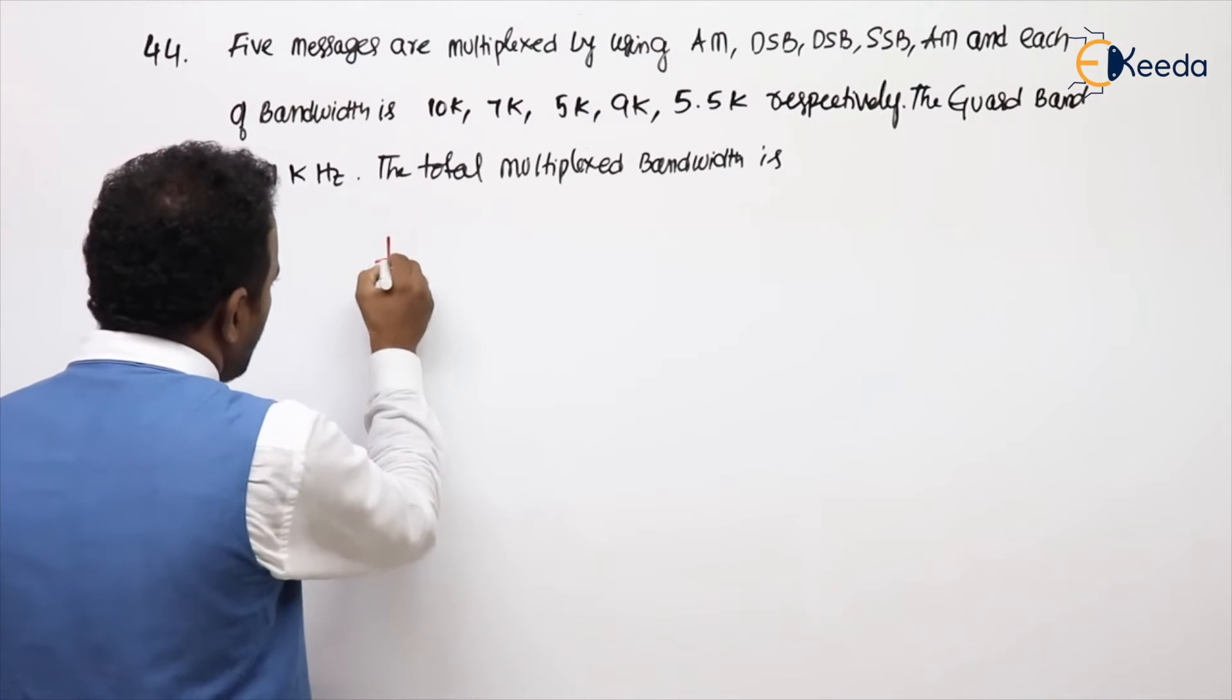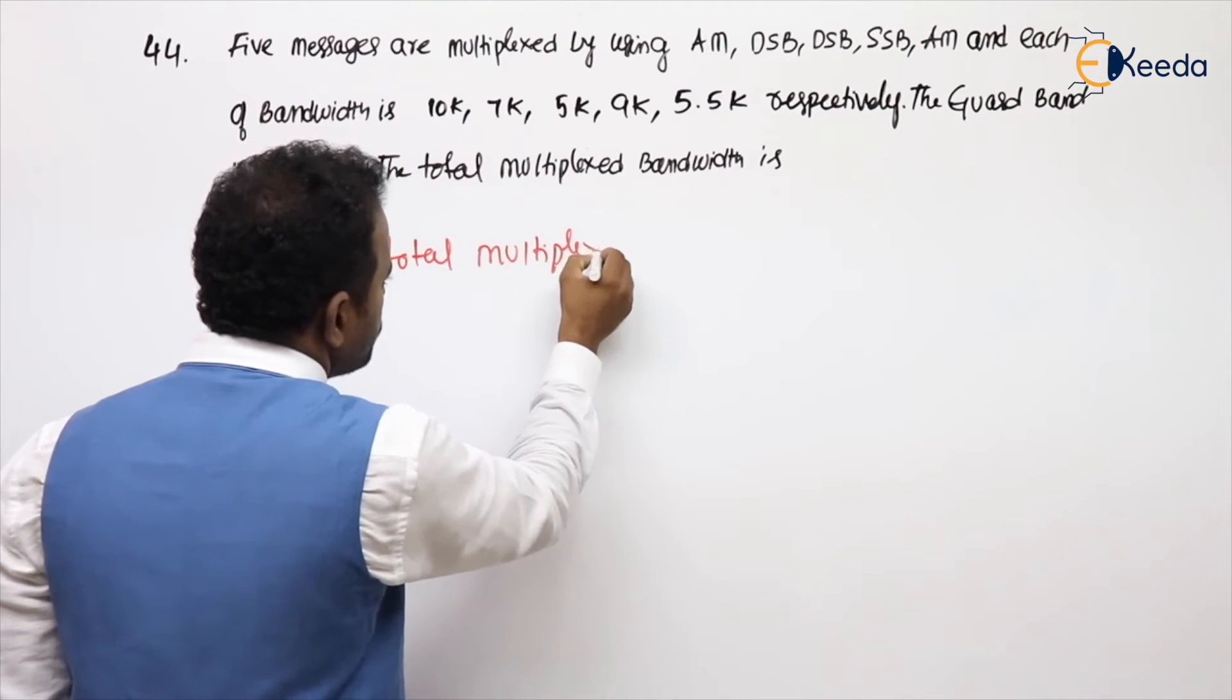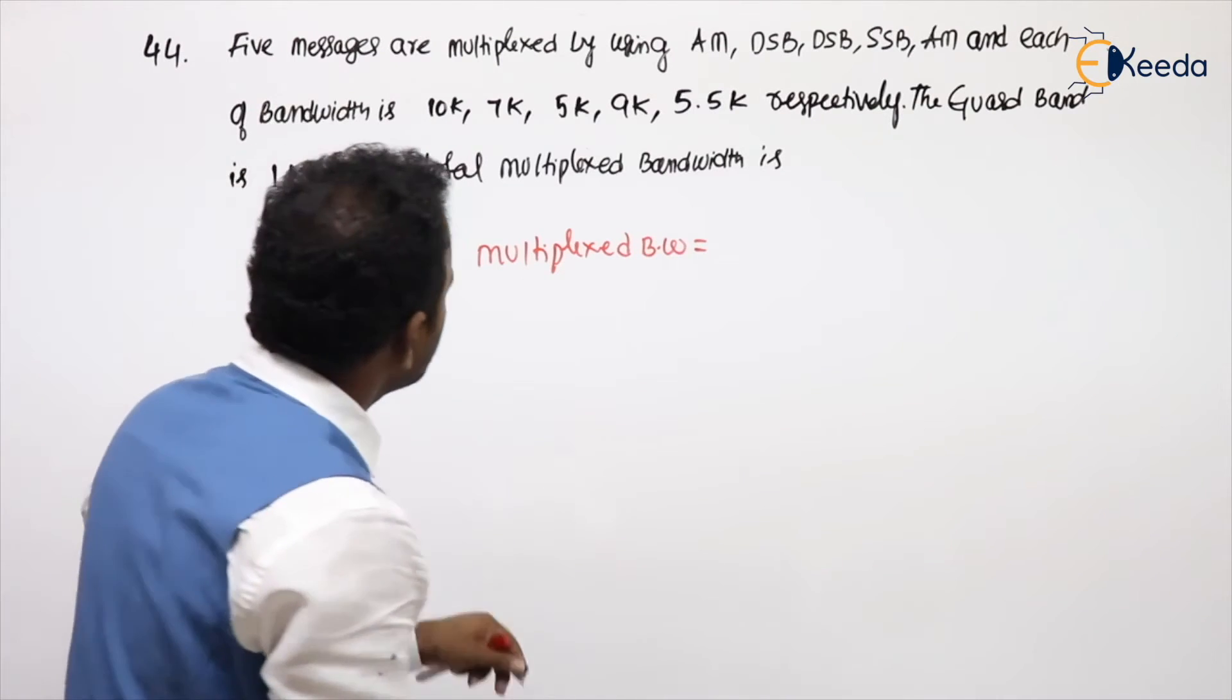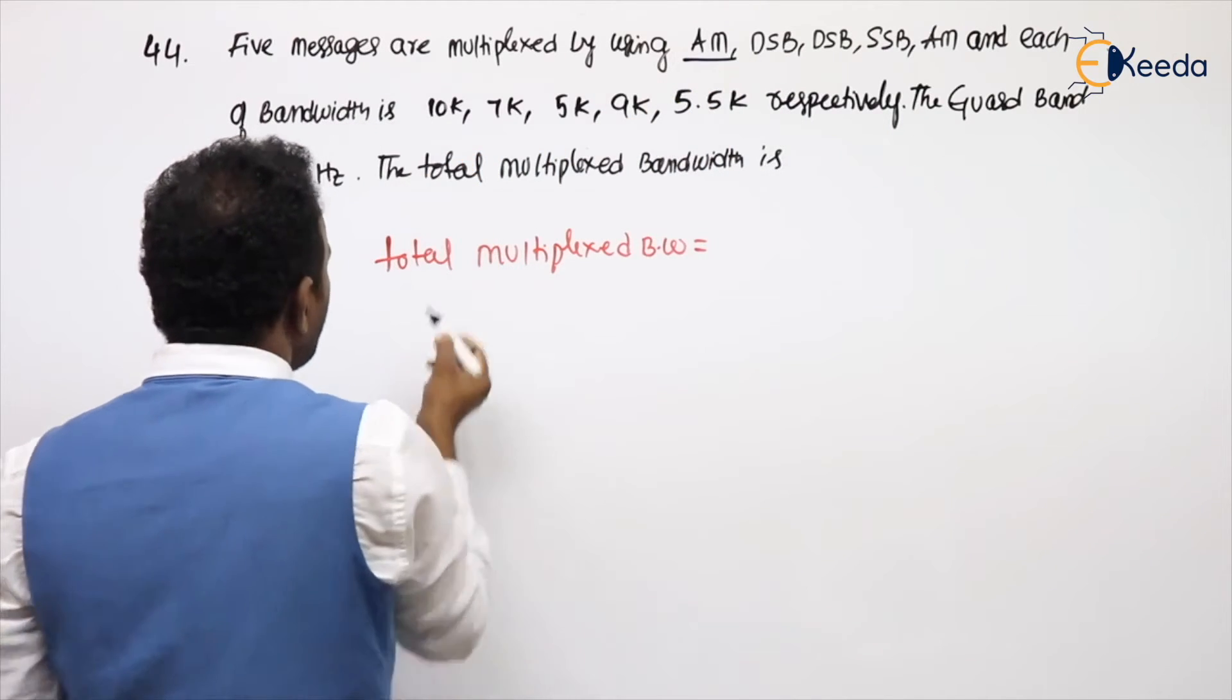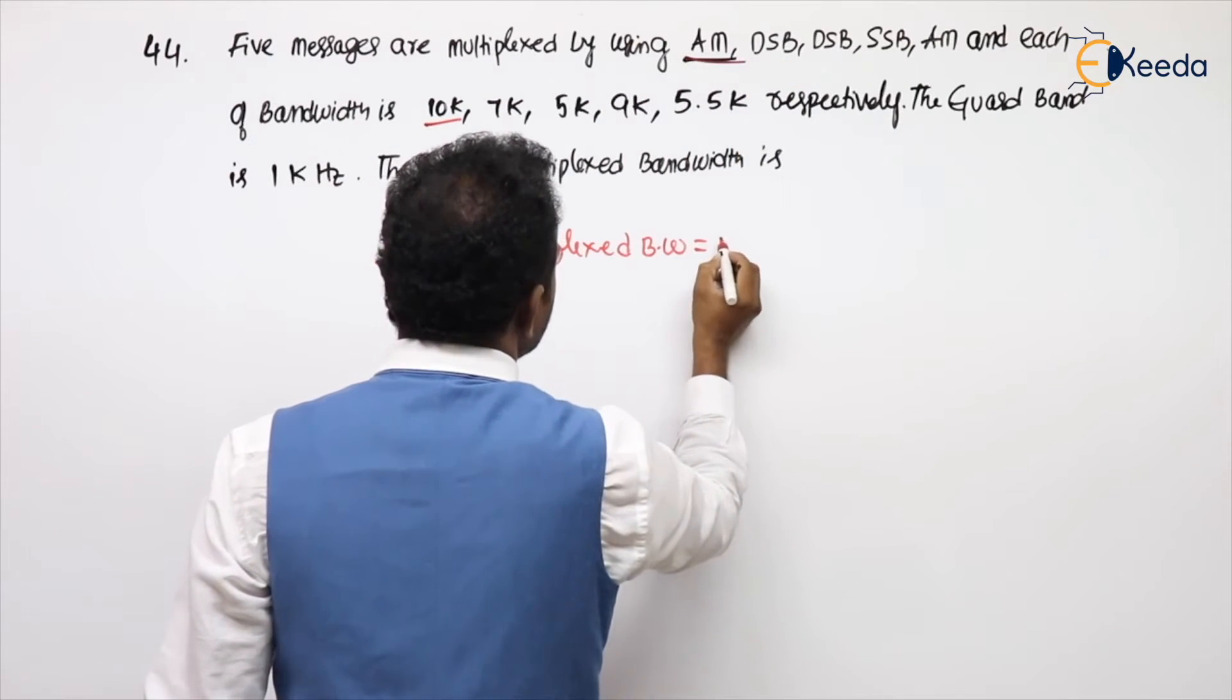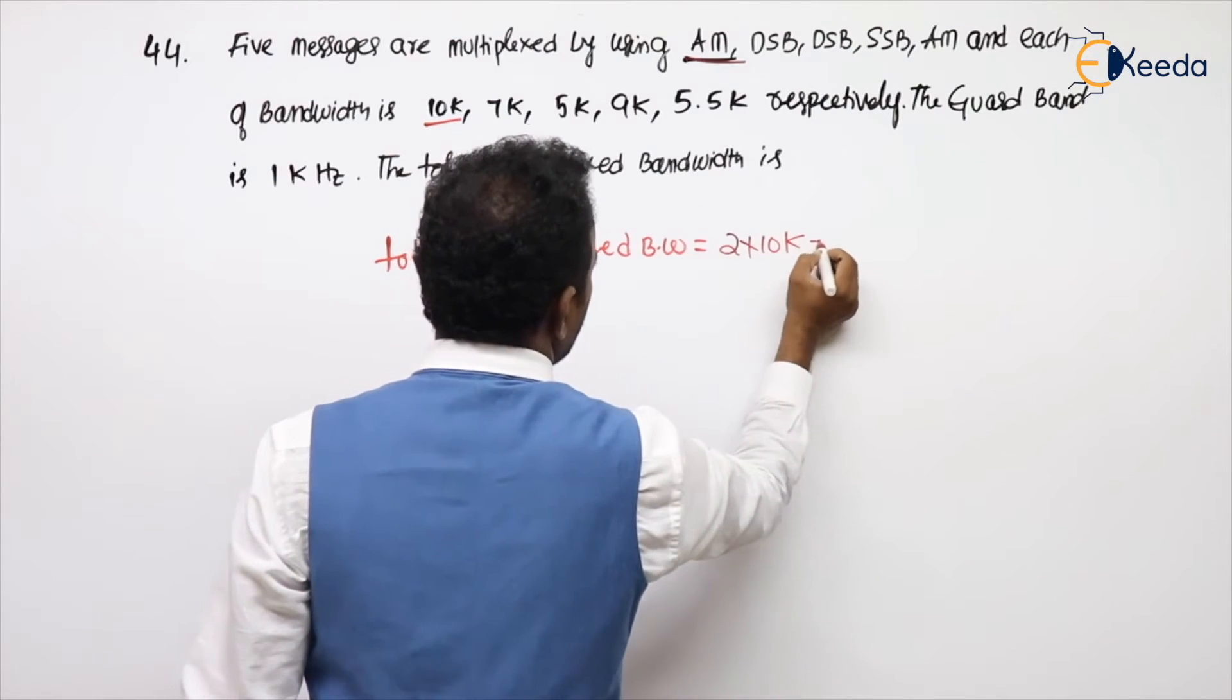Can I write directly, the total multiplexed bandwidth is, for the first one, which modulation scheme are we using? AM. First message bandwidth is 10K, so bandwidth of the first message is 2FM, so 2 into 10K, plus second message.